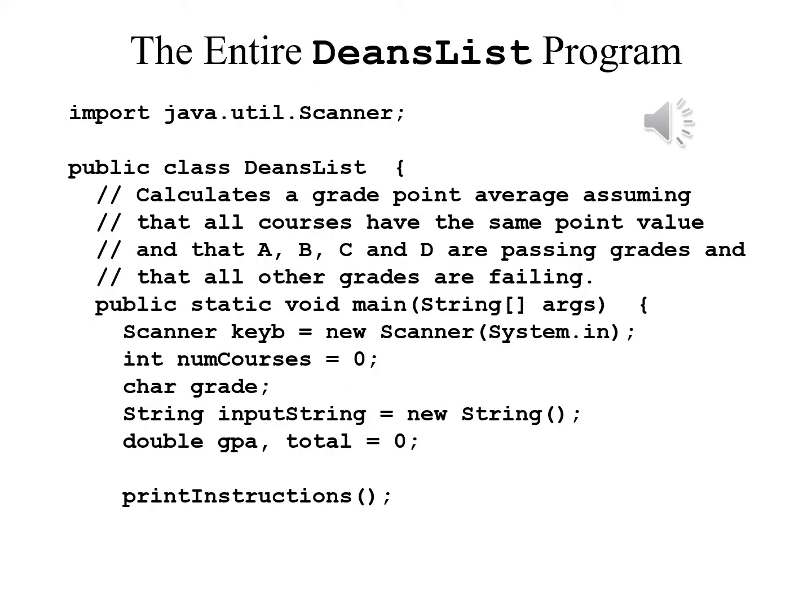We begin as usual with import java.util.Scanner. We begin the class by writing its header: public class DeansList, and after the open brace we're ready to begin the program. We begin with a comment about the main method: calculates a grade point average assuming that all courses have the same point value and that A, B, C, and D are passing grades and that all other grades are failing. Now we write the header for the main method: public static void main(String[] args), and after the open brace we're ready to declare variables.